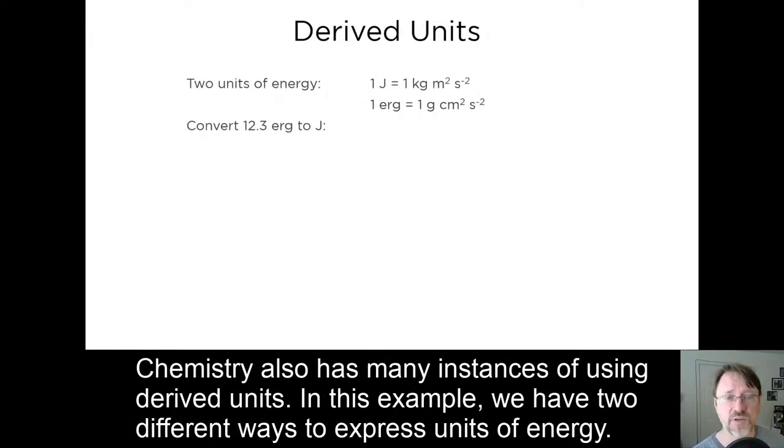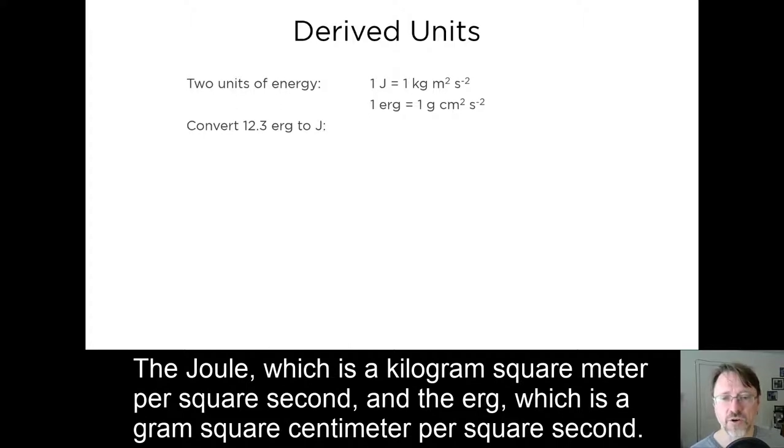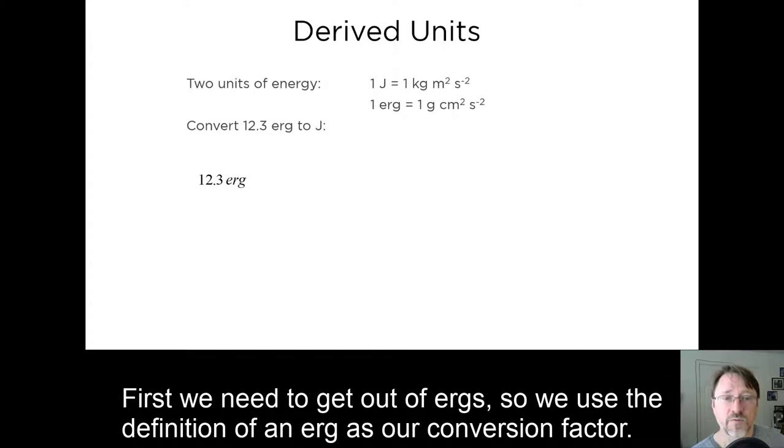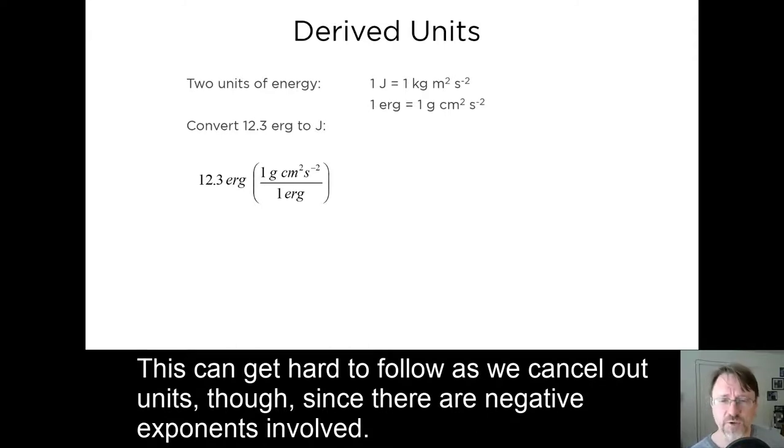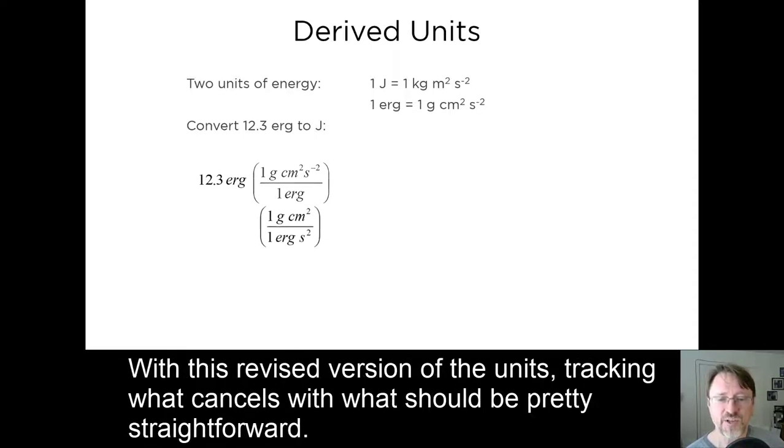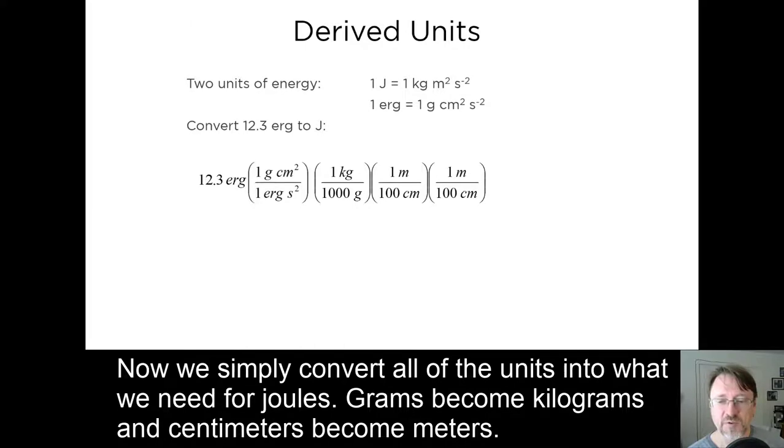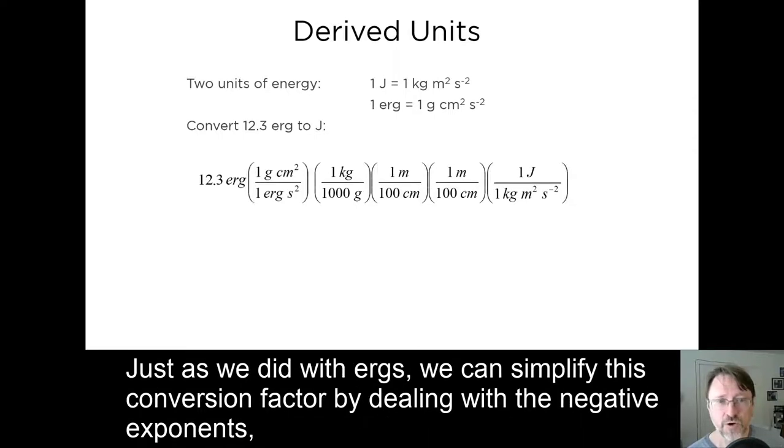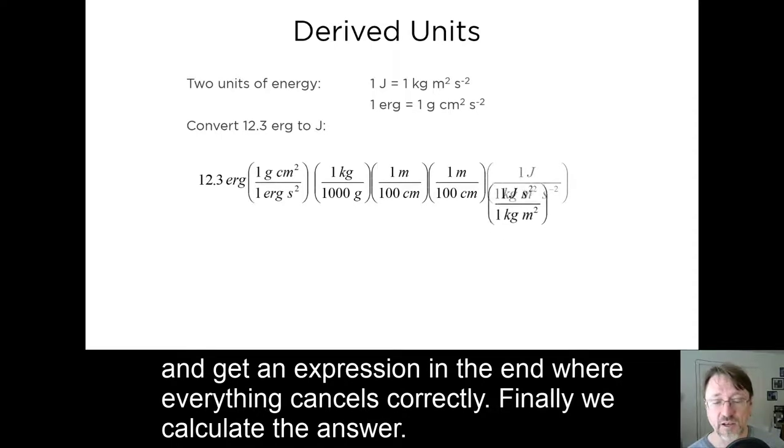Chemistry also has many instances of using derived units. In this example, we have two different ways to express units of energy. The joule, which is a kilogram square meter per square second, and the erg, which is a gram square centimeter per square second. So, let's see how we might convert 12.3 ergs to joules. First, we need to get out of ergs, so we use the definition of an erg as our conversion factor. This can get hard to follow as we cancel out units, though, since there are negative exponents involved. That's easy to fix by moving the units with negative exponents across the fraction line and switching the sign. With this revised version of the units, tracking what cancels with what should be pretty straightforward. Now we simply convert all of the units into what we need for joules. Grams become kilograms, centimeters become meters. Finally, we convert to joules, using the definition of a joule as a conversion factor. Just as we did with ergs, we can simplify this conversion factor by dealing with the negative exponents, and get an expression in the end where everything cancels correctly. Finally, we calculate the answer.